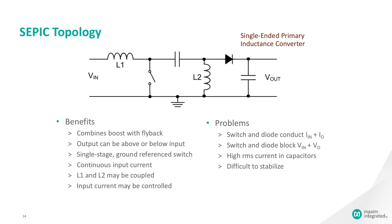SEPICs are useful in applications in which a battery voltage can be above and below that of the regulator's intended output. For example, a single lithium-ion battery typically discharges from 4.2 volts to 3 volts. If the other components in the system require 3.3 volts, then the SEPIC would be effective.